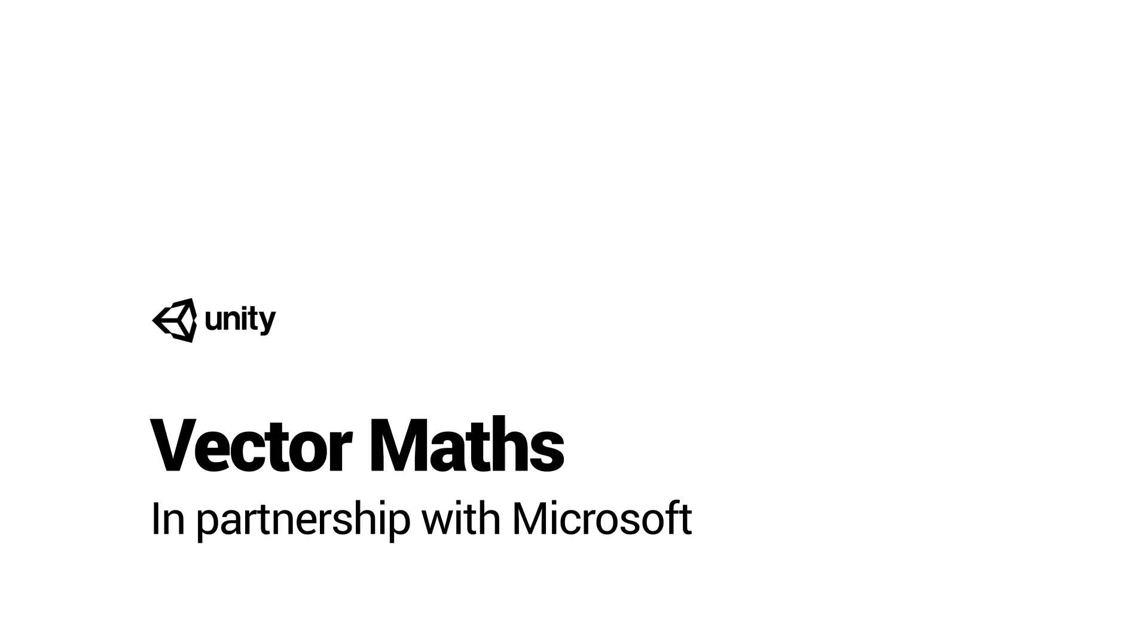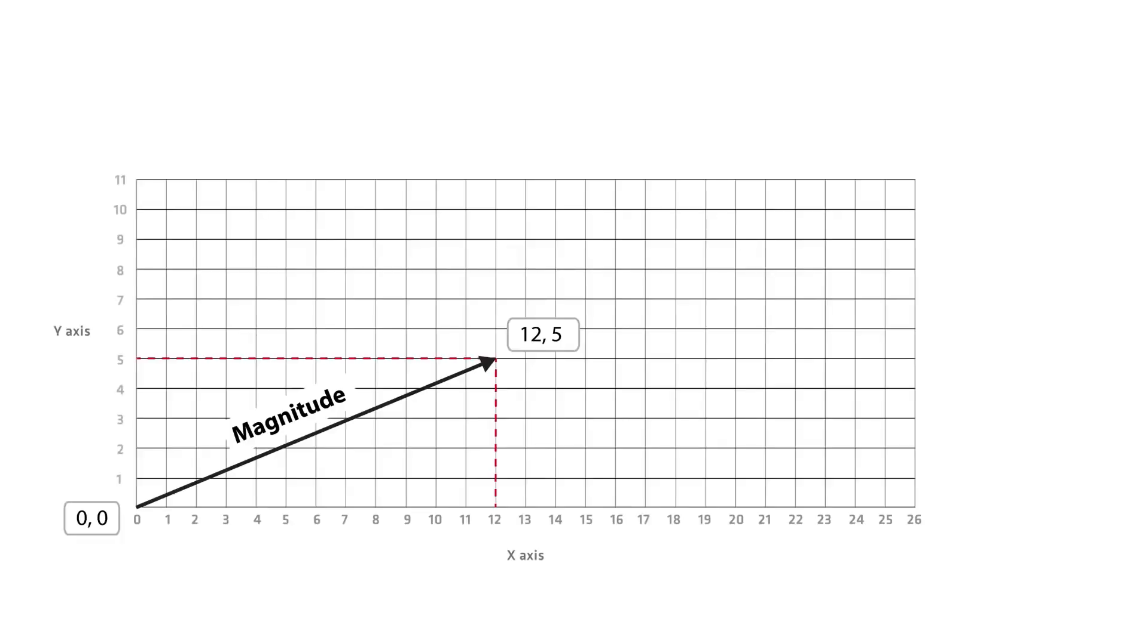In game development we use vectors to define meshes, directions and all manner of other calculations which makes them essential to understand. A vector is a line drawn between two points. Vectors also have a length known as their magnitude.